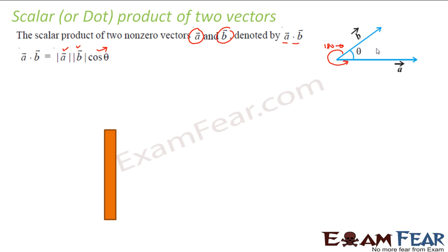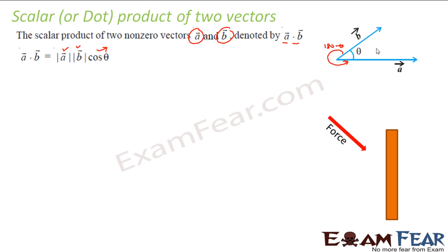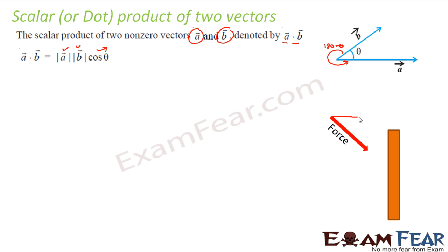Let's derive this — how we got AB cos theta. Let's suppose I have a log and apply force on it. What you see is that this object moves, and the whole journey I have applied the force. So in this case, if this was the force I applied, and let's assume that my displacement was in this direction.